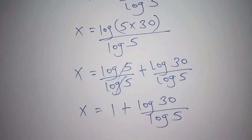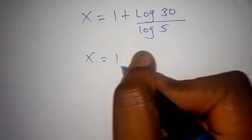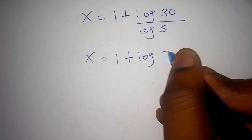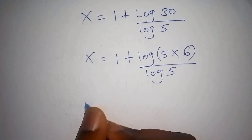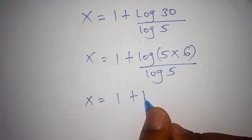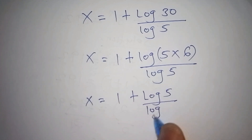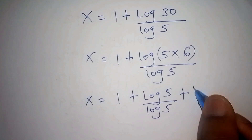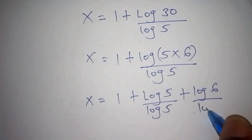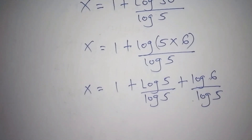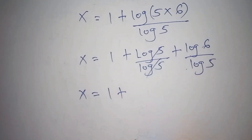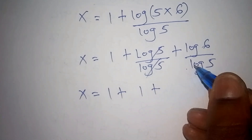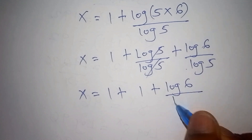We do not stop there — we can still proceed. So now x is equals to 1 plus the log of 30 all over the log of 5. The log of 30 can also be expressed as the log of 5 multiplied by 6, then all over the log of 5. We split this again: log of 5 over log of 5 changes to addition, and now we have 1 plus 1 plus the log of 6 all over the log of 5.